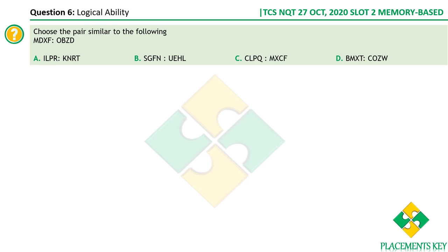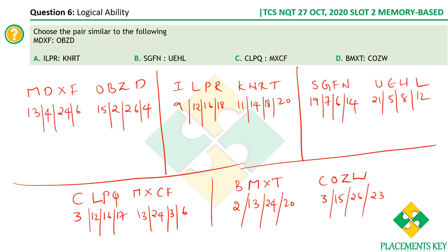Next question: choose a pair similar to the given pair. First, replace each alphabet with its corresponding position number. The question is whether we need to do this for all options — not necessarily. If option A satisfies the pattern, we can immediately choose it. Let's find the pattern in the given pair.